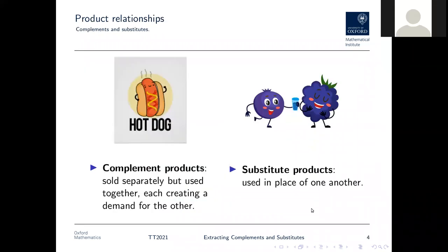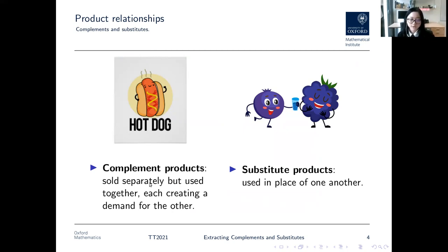There are two central concepts in product relationships. One is complement products and the other is substitute products. Complement products such as hot dogs and hot dog buns are sold separately but used together — they normally have more value when consumed together than alone. Substitute products such as different kinds of blueberries can be used in place of each other.